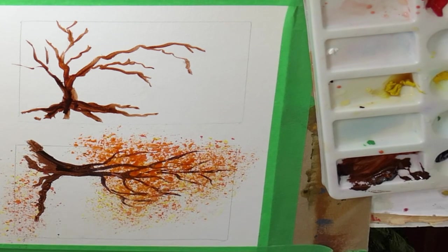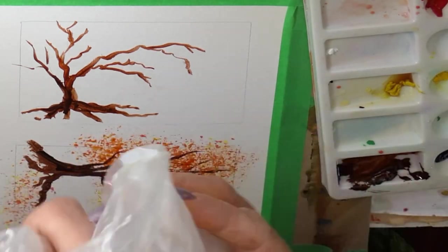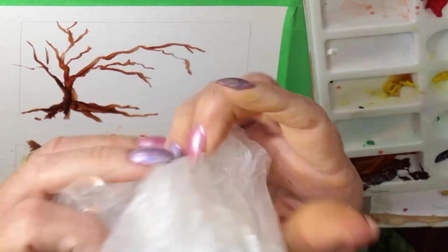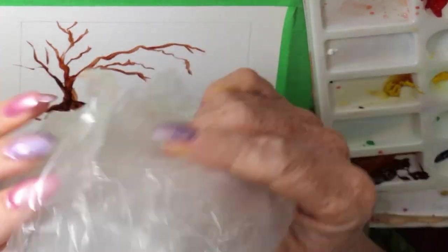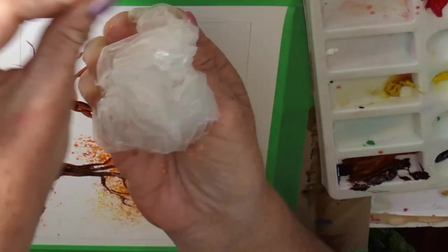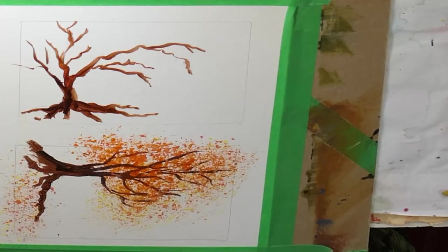And I'm going to get my plastic bag here. And you don't want to make your plastic bag too smooth like this. You want to make sure that it's got lots of patterns. So you want to really screw it up so you've got lots of lines and patterns in it.